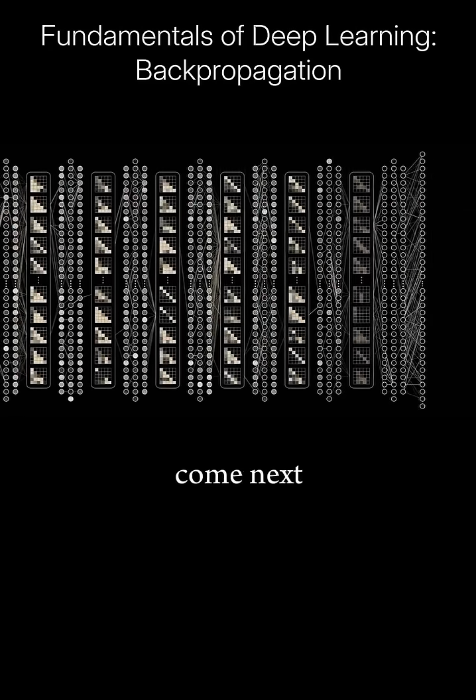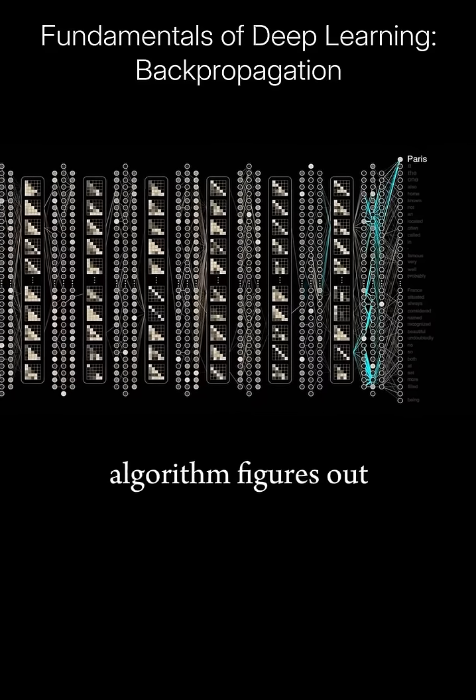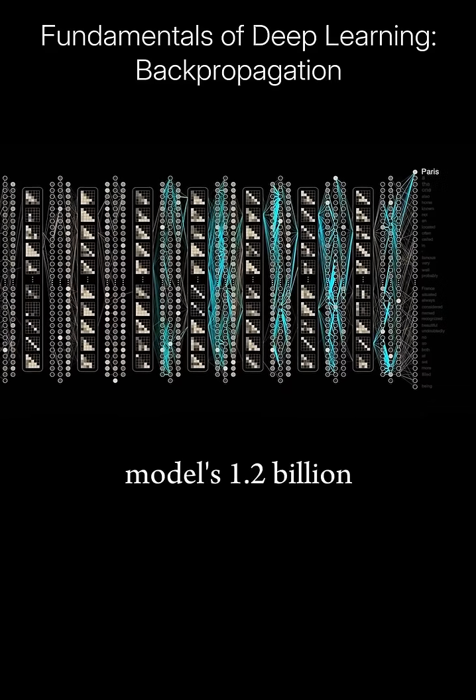LLAMA predicts the token that will come next. And the backpropagation algorithm figures out how to update each of the model's 1.2 billion parameters.